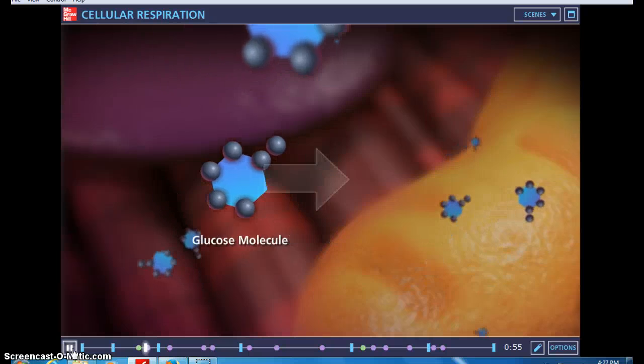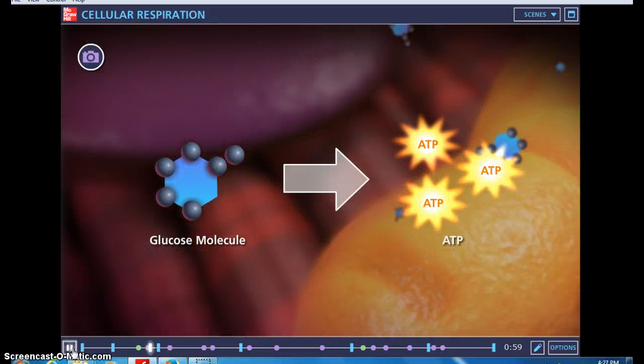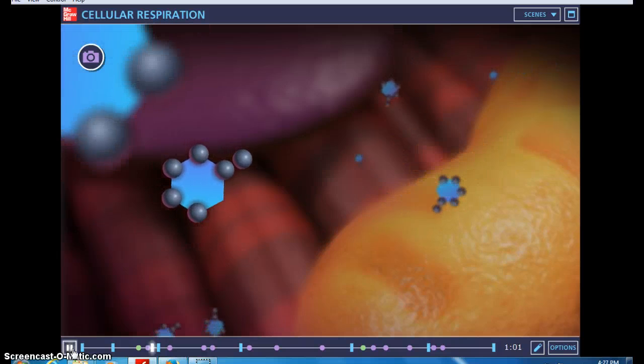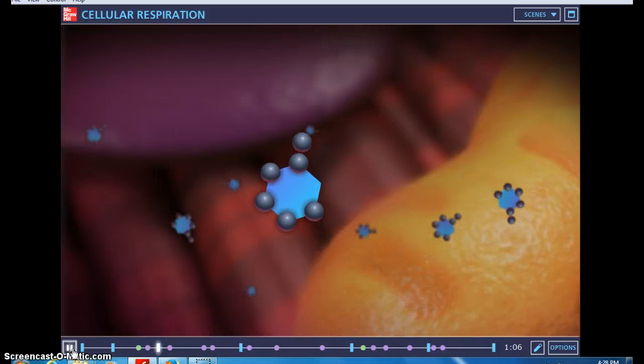The overall goal is to make ATP, a storage form of energy for most cells. Cellular respiration is a four-stage process that begins with glycolysis.